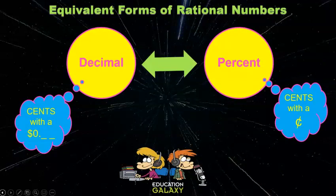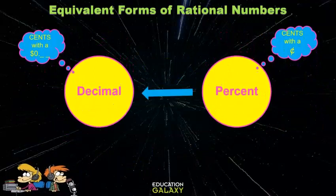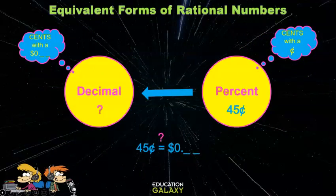To convert between percents and decimals, think about money. The percent would be cents, and the decimal would be how you write that much cents with a dollar sign. To write forty-five percent as a decimal, think forty-five cents. How would you write that with a dollar sign? Zero point forty-five.